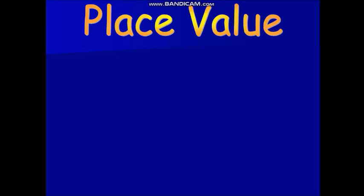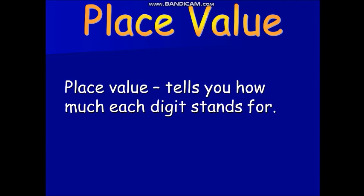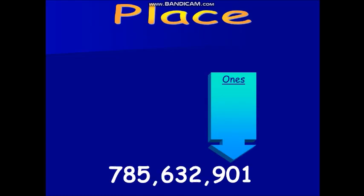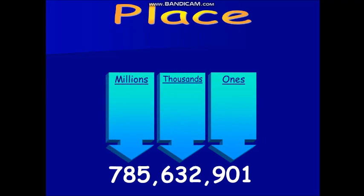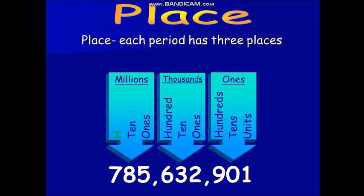Now, let's move on to place values. The place value tells you how much each digit stands for. As you can remember, we have three periods: ones, thousands, and millions. There will be three places for each period. For each period, we have the ones or units, tens, and hundreds. All we need to do is combine the name of the place and the name of the period, except for the ones period.